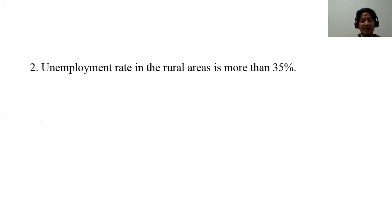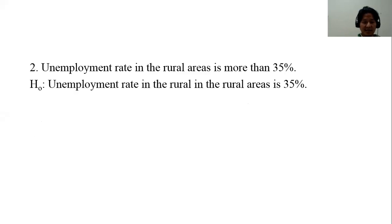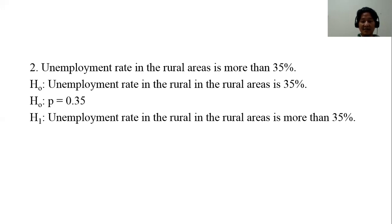For example two: the unemployment rate in the rural areas is more than 35 percent. The null hypothesis states that the unemployment rate is equal to 35 percent, written as p = 0.35. The alternative hypothesis checks if it exceeds 0.35, so p > 0.35.